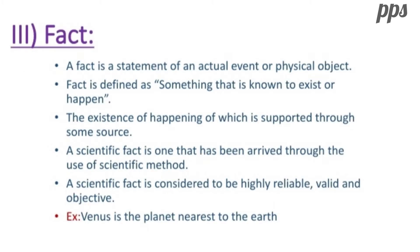A fact is a statement of an actual event or physical object. It is defined as something that is known to exist or happen, the existence of which is supported through the same source. Fact has been arrived at through the use of scientific method, whereas fact is highly reliable and objective. Good and Hatt have enumerated the functions of facts as: they initiate theory, they modify existing theory, they redefine and clarify theory, form the basis of all knowledge and are responsible for the initiation of any theory or law. The whole process of scientific enterprise is continuously replaced by new facts and discoveries. For example: Venus is the planet nearest to the earth, and water boils at 100 degree Celsius.